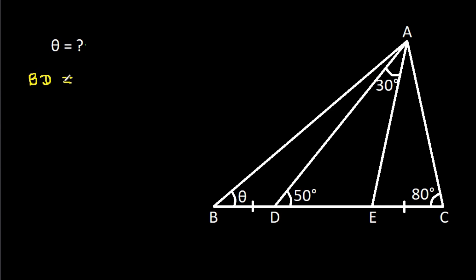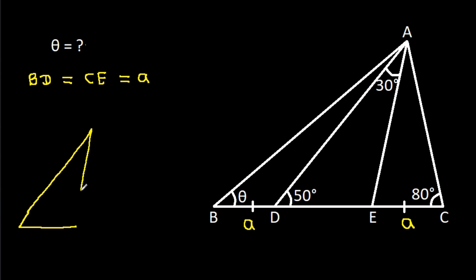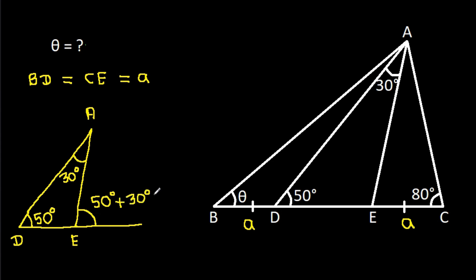We have BD is equal to CE. Suppose BD is A and CE is A. Now, in triangle ADE: angle ADE is 50 degrees and angle DAE is 30 degrees. So this exterior angle will be 50 degrees plus 30 degrees, that will be 80 degrees. So angle AED is 80 degrees.